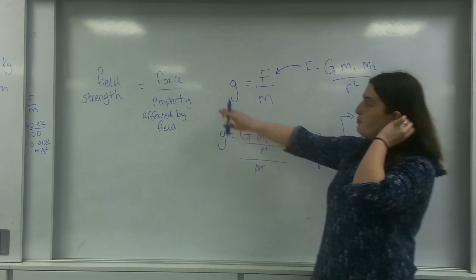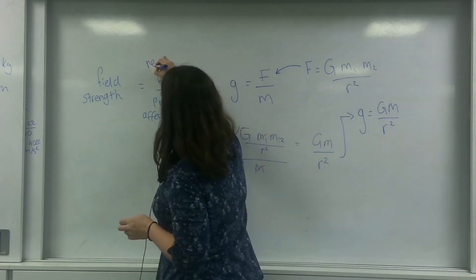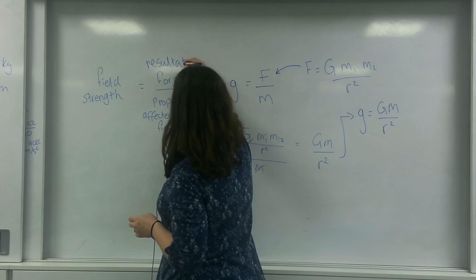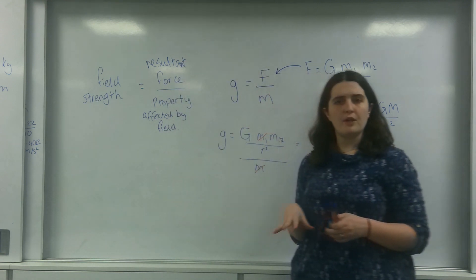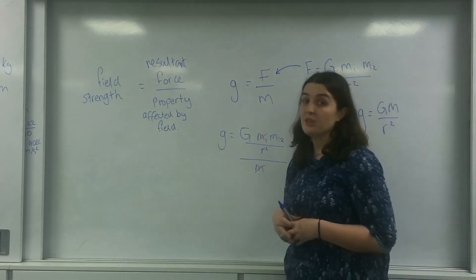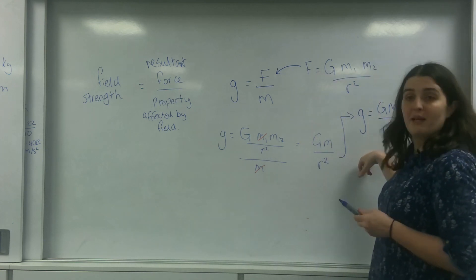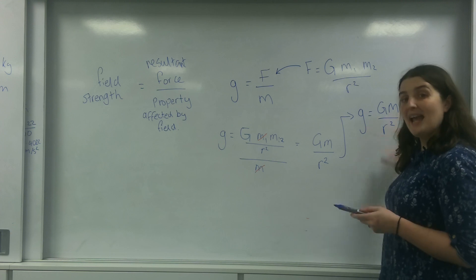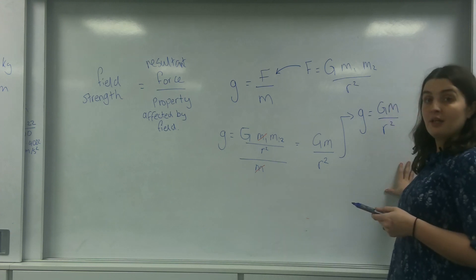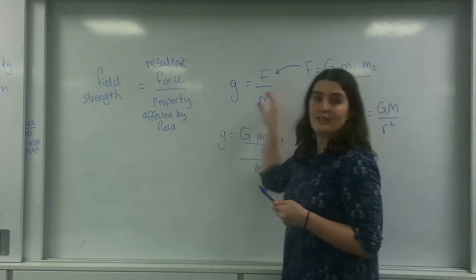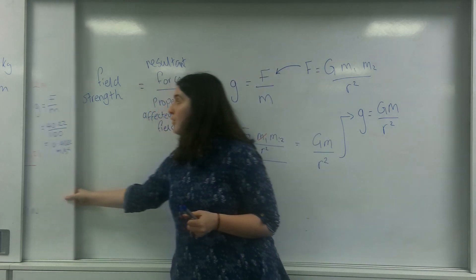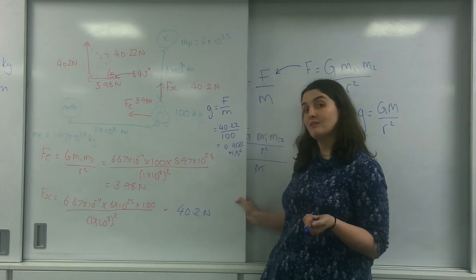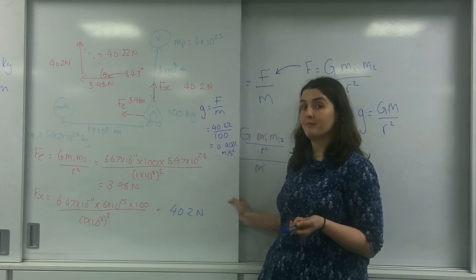So the idea of field strength being the resultant force that you feel, divided by the thing that's actually affected by the field, gives us two useful applications. Firstly, the formula GM over R squared lets me work out g at any point in a field. And secondly, when dealing with more than one field, I can work out the resultant gravitational field strength.